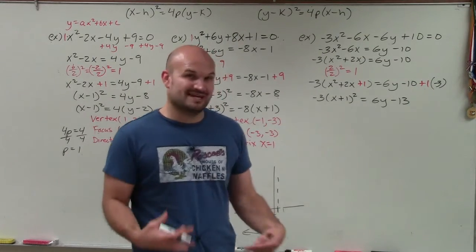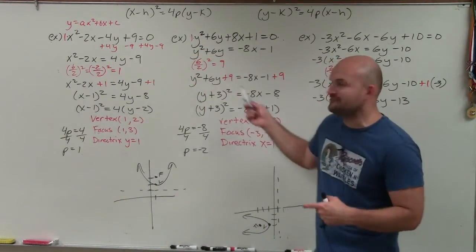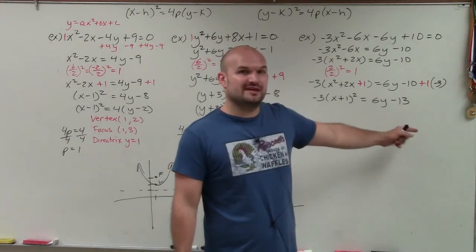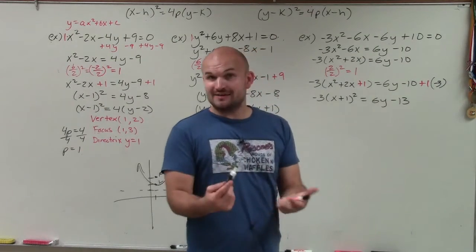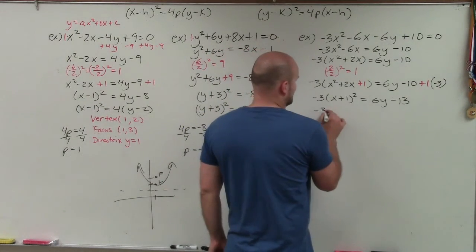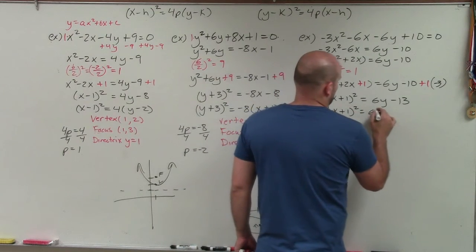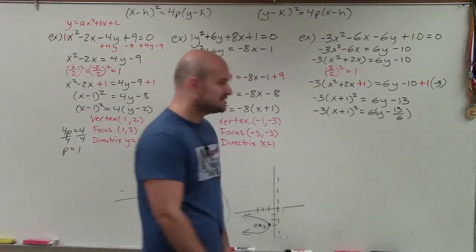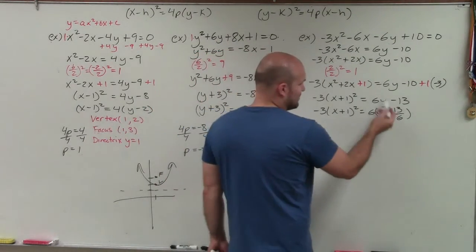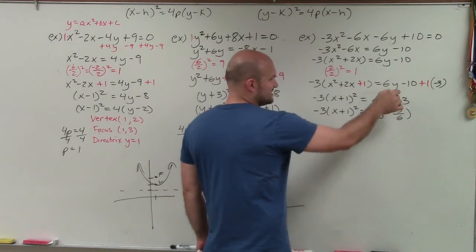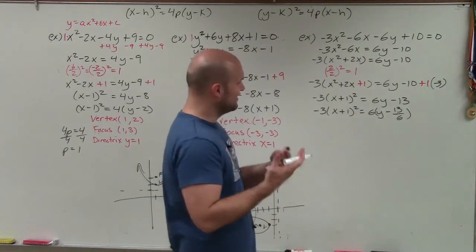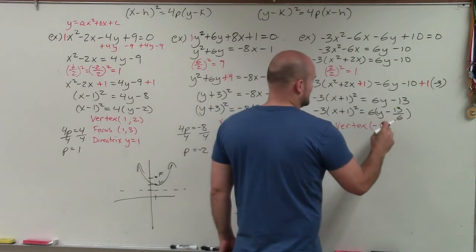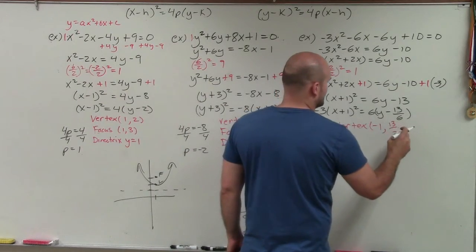To find the vertex, remember we always need to factor out the coefficient from the y side. We need to factor 6 out of 13, which requires a fraction. Factoring gives 6(y − 13/6). We can verify: 6 times y is 6y, and 6 times −13/6 is −13 — correct. So h is with x, giving h = −1, and k = 13/6.